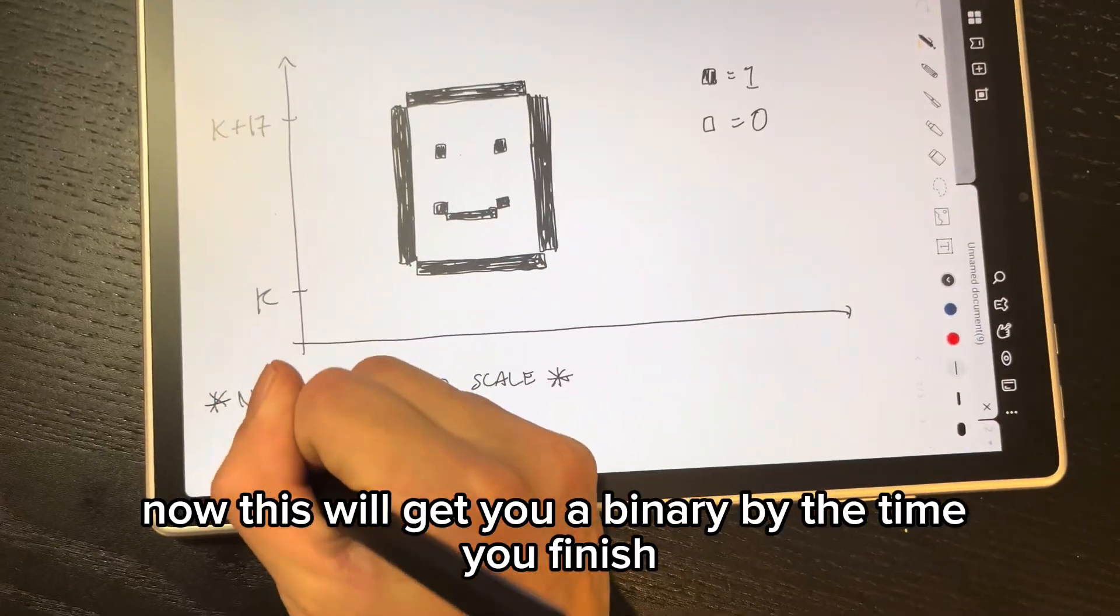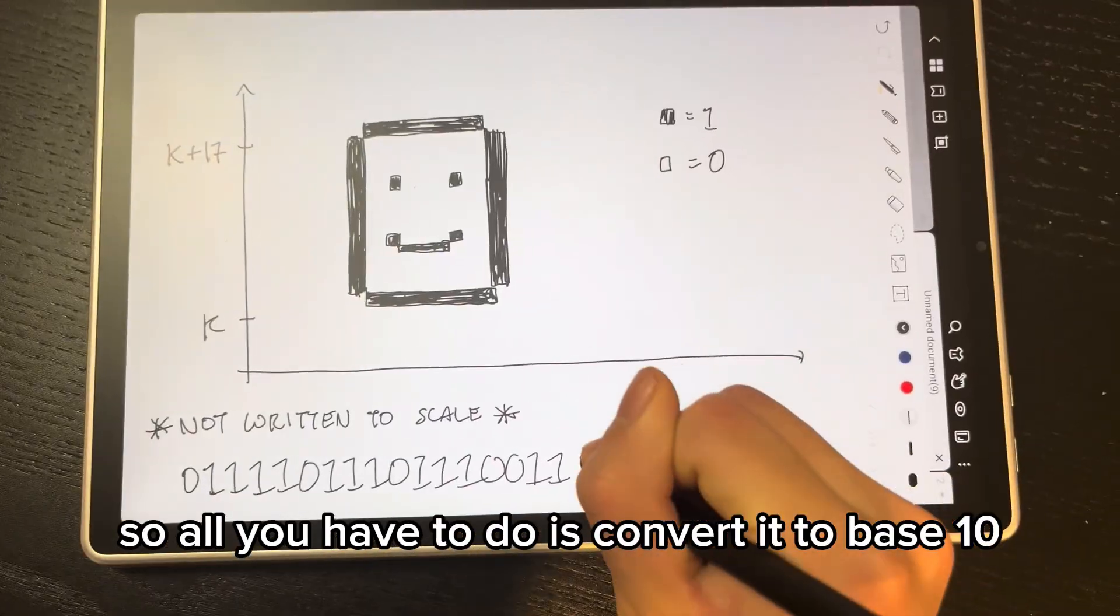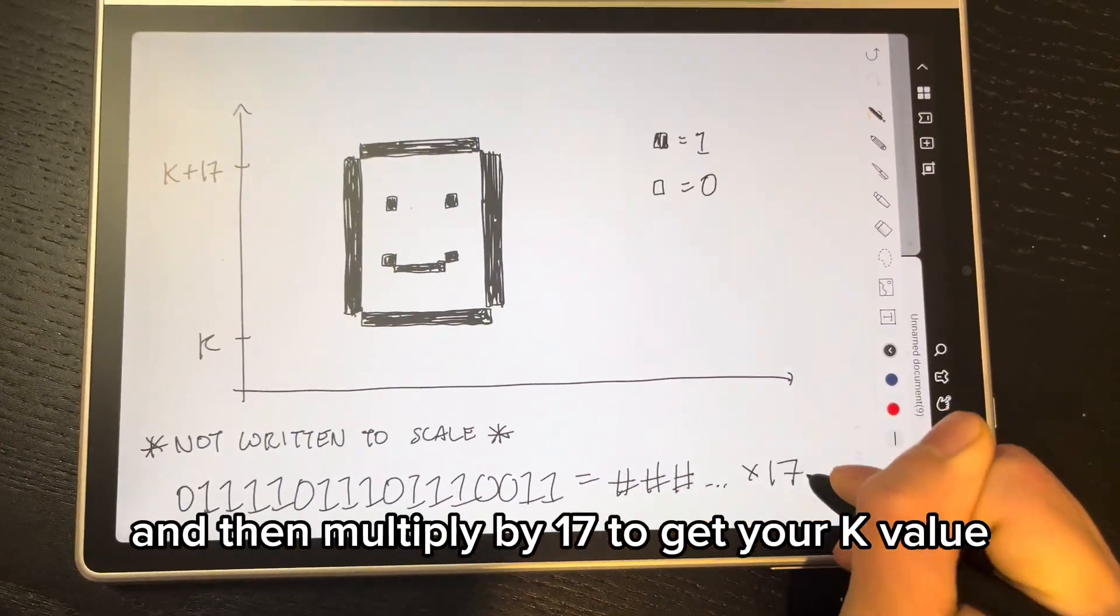Now, this will get you a binary by the time you finish, so all you have to do is convert it to base 10, and then multiply it by 17 to get your k value.